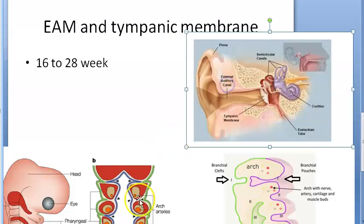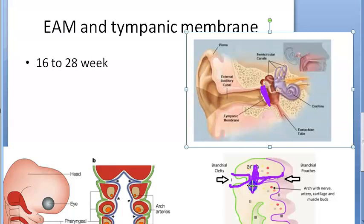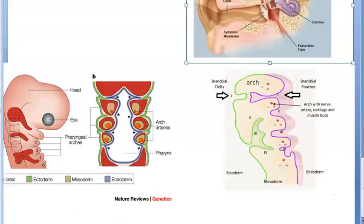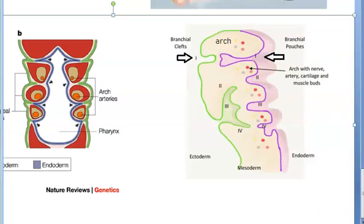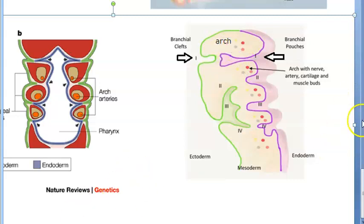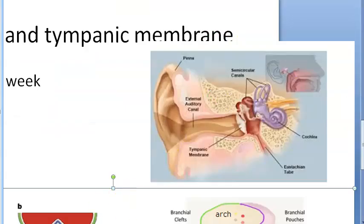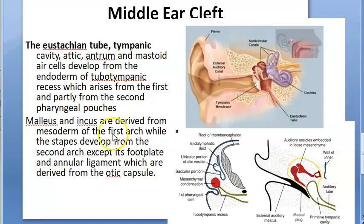Now let's also finish the tympanic membrane development. You can see the tympanic membrane here. There is the cleft from one side and the pouch from the other side; whatever is in the middle becomes the tympanic membrane. The tympanic membrane has all three layers: outer ectoderm, inner endoderm, and middle mesoderm.